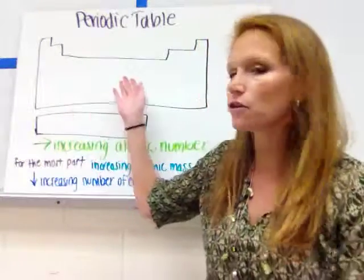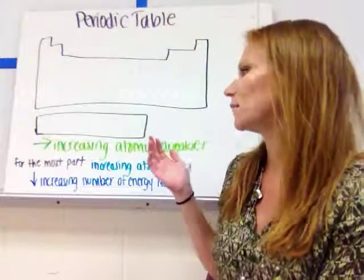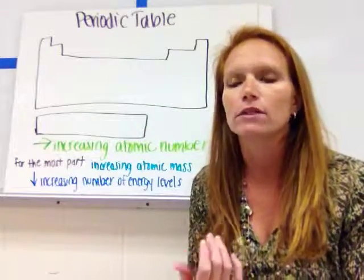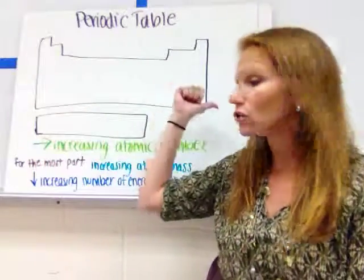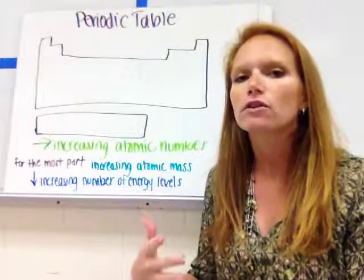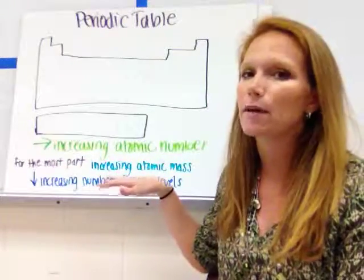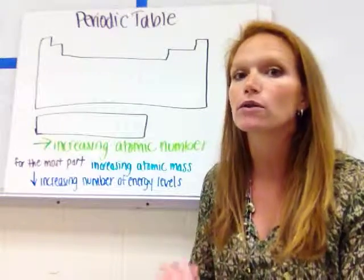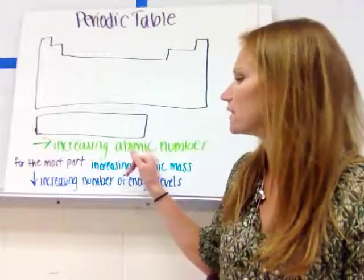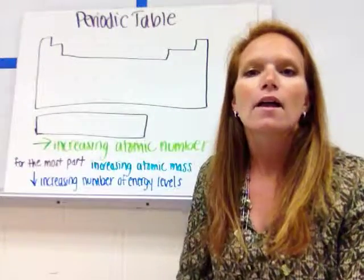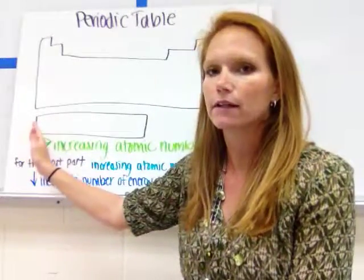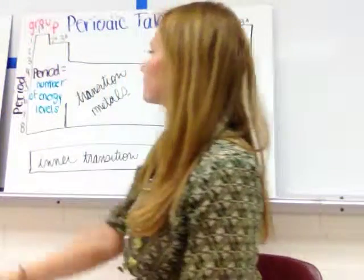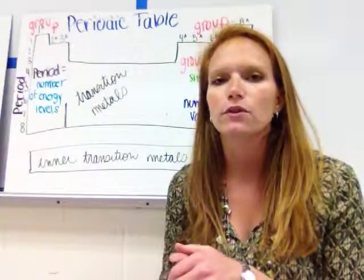The periodic table organizes all the elements in a few different ways. Most importantly, it's organized by increasing atomic number as you go across. For the most part it's also organized by increasing atomic mass, though there are a couple of exceptions. It also organizes elements by an increasing number of energy levels as you go down.